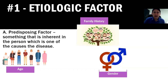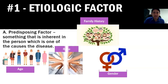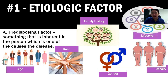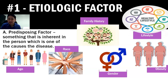Other predisposing factors include race — such as Africans, Americans, or Caucasians — obesity, and lifestyle, like having a sedentary lifestyle. The key word for predisposing factor is that it is inherent; it is within the person himself.